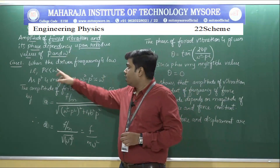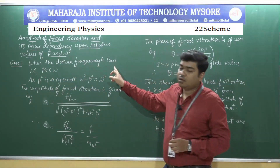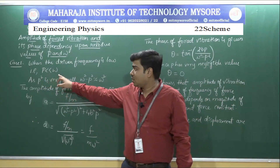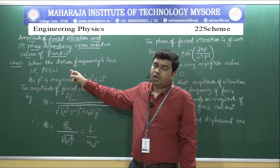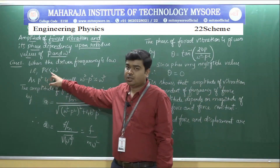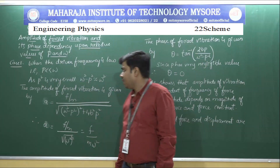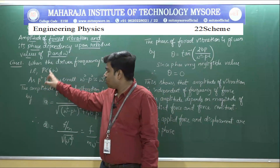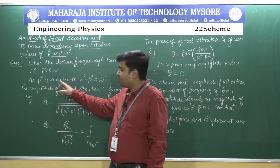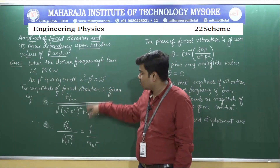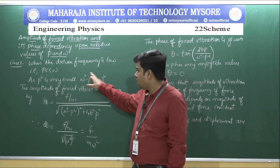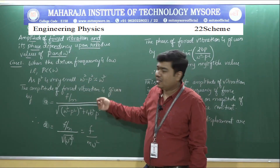Case 1: The driven frequency is much less than the natural frequency of the oscillating body — that is, p is very much less than omega. Since p is very small, p squared is negligible, and therefore omega squared minus p squared is nearly equal to omega squared.